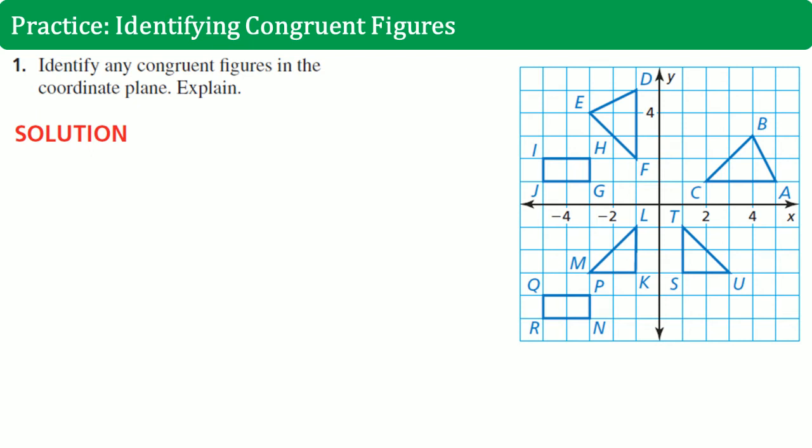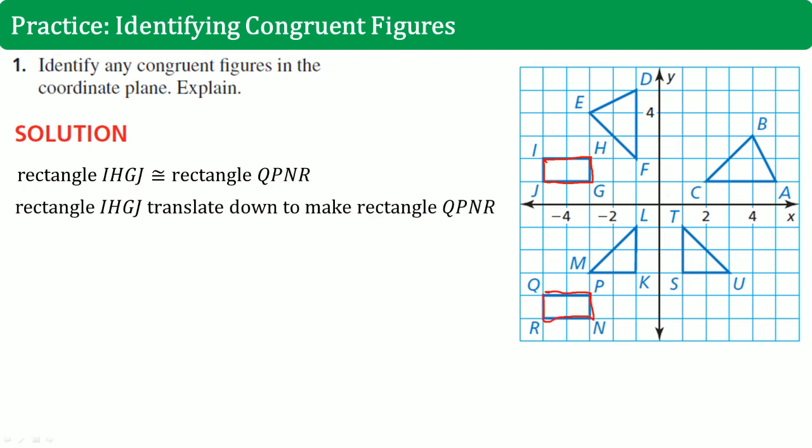Here's the solution. I will say rectangle IHGH is this one, which is congruent to this one. And how do we do that? We did that by translating it down. And it went down one, two, three, four, five, six. It went down six.